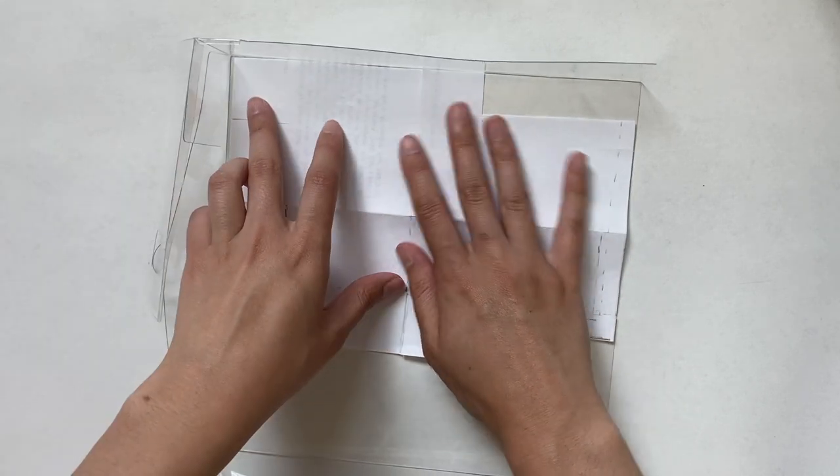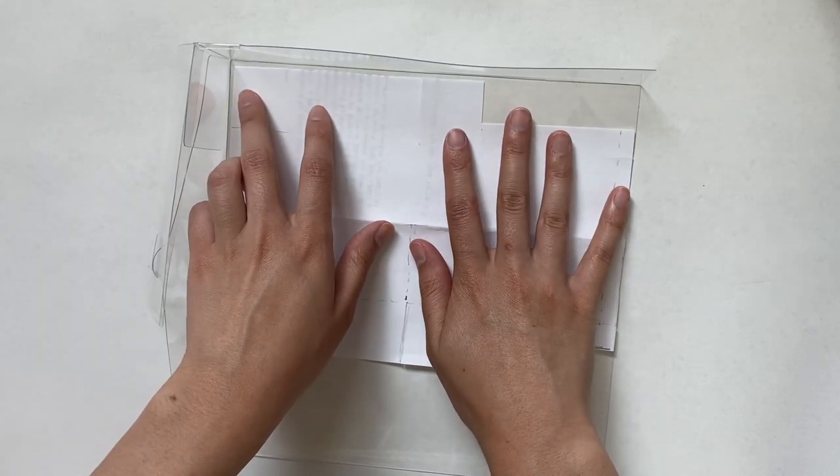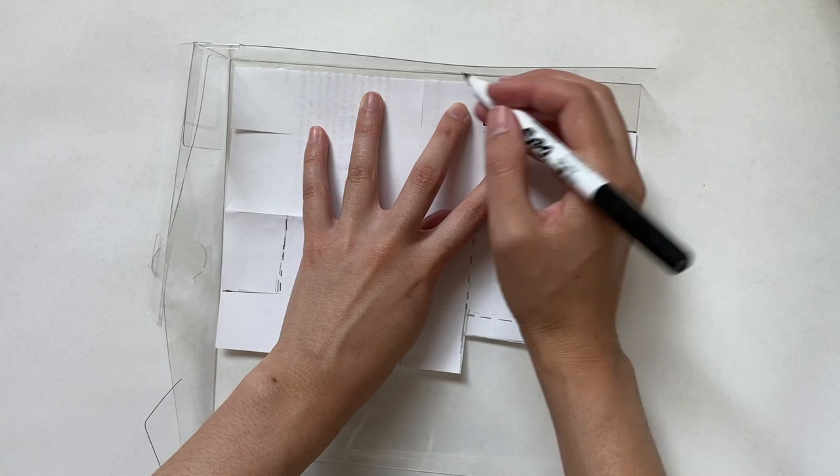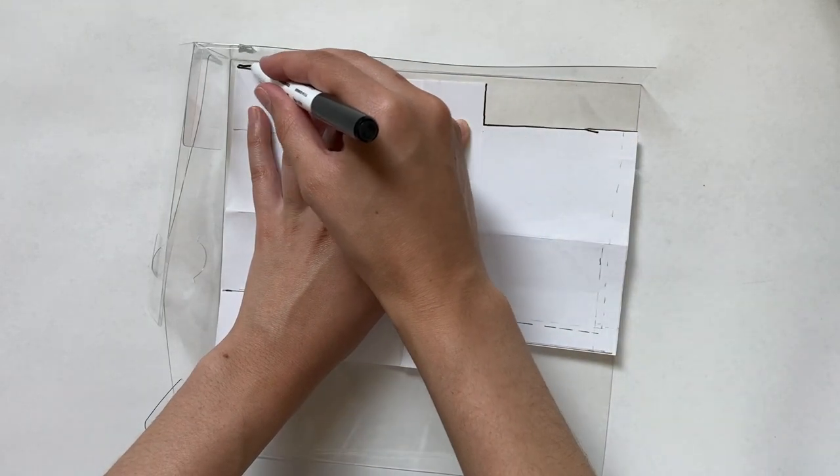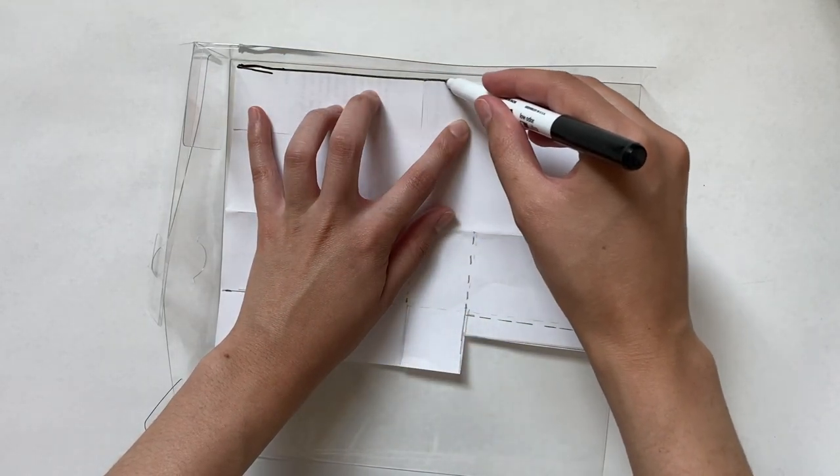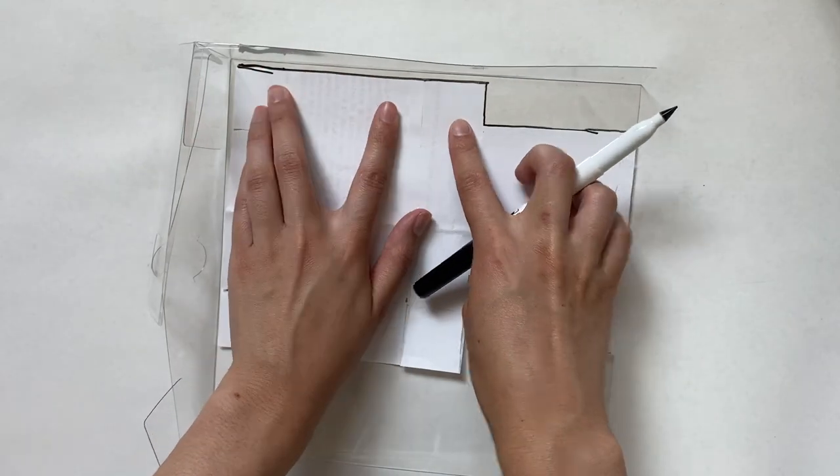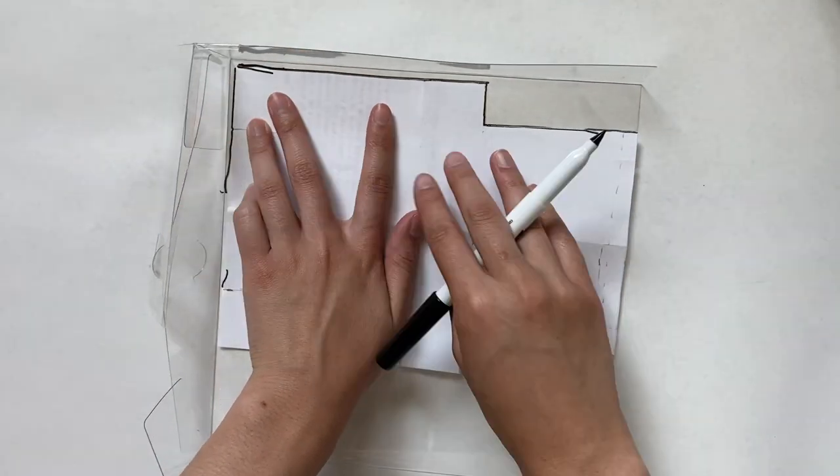So the first thing I need to do is trace my template and cut it out. I'm using a dry erase marker for this since it'll easily wipe off the plastic. For this template you'll basically want to trace or cut on the solid lines and then fold on the dashed lines.